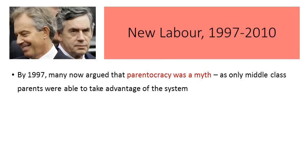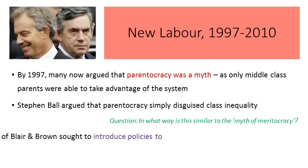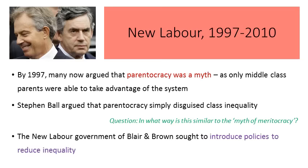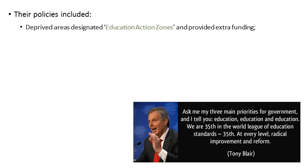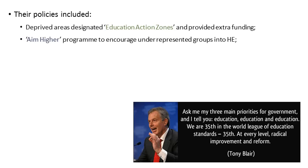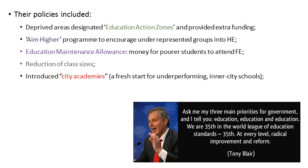Next, we move on to the New Labour years of 1997 to 2010. By 1997, many had argued that parentocracy was in fact a myth, as only middle-class parents were able to take advantage of the system. Stephen Ball argued that parentocracy simply disguised class inequality — similar to the myth of meritocracy. The New Labour government of Blair and Brown sought to introduce policies to reduce inequality. These policies included designating deprived areas as education action zones and providing extra funding, Aim Higher programmes to encourage underrepresented groups into higher education, the Education Maintenance Allowance providing money for poorer students in further education, and the reduction of class sizes.